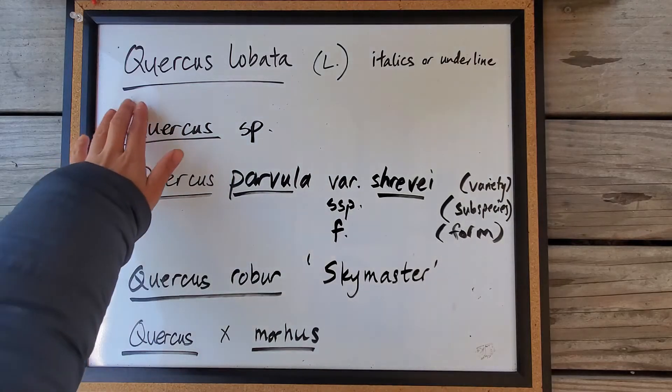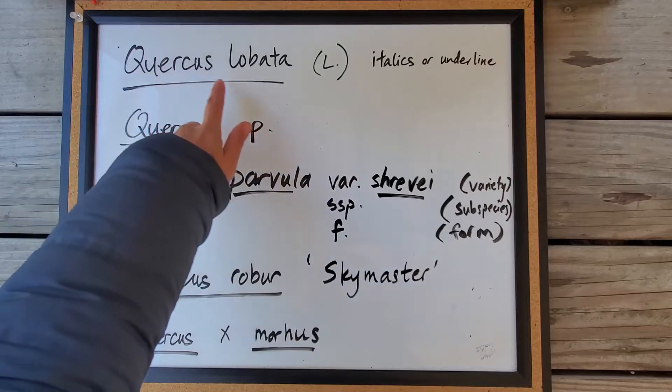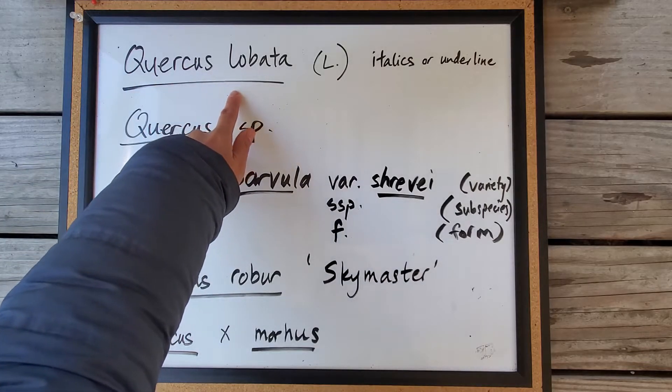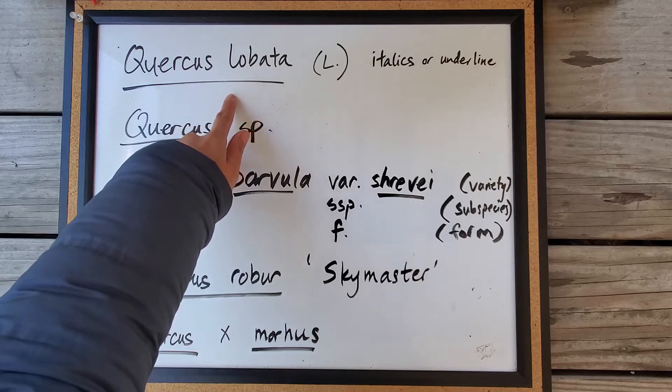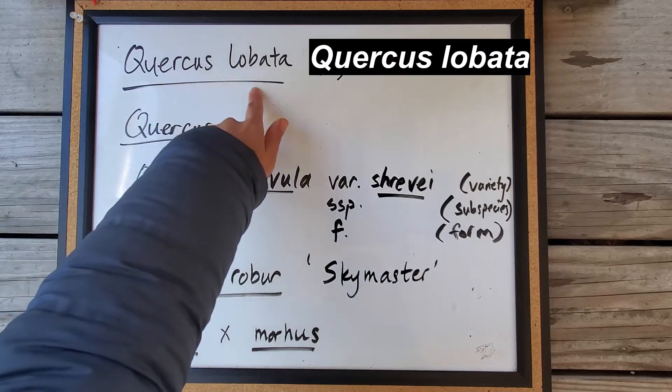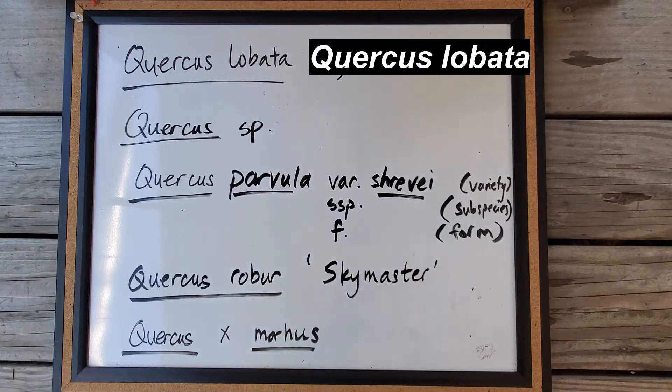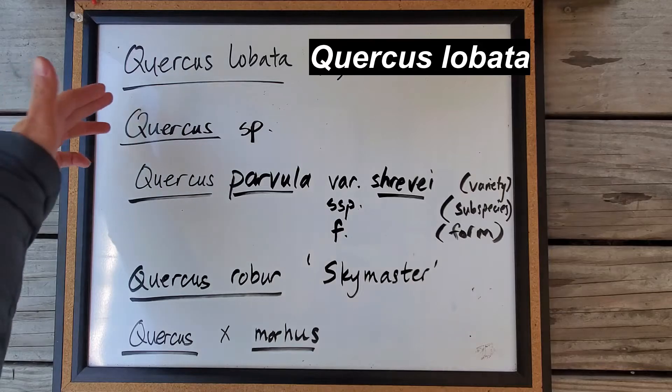So the way you would write this is the genus is always capitalized, but the specific epithet is always lowercase. And if you're typing this out, you want to italicize this name, but if you're writing it out by hand, like I am, you underline it.